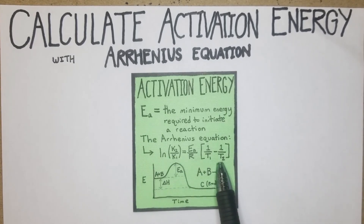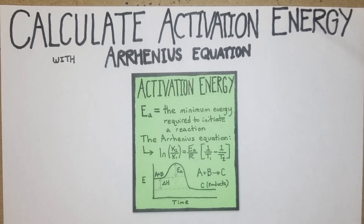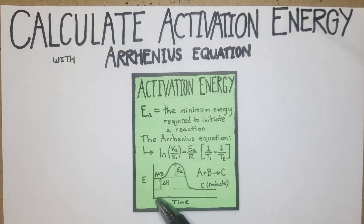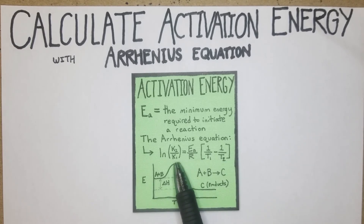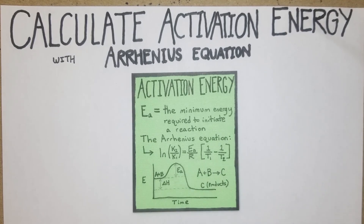Here's the Arrhenius equation. It seems a little bit complex, but basically what it allows you to do is calculate the activation energy if you know K at two different temperatures, and if you know K at one temperature and you know the activation energy, you can calculate K at any other temperature. The activation energy is where you go from the baseline to the energy required to initiate the reaction so you can get your products at the end.